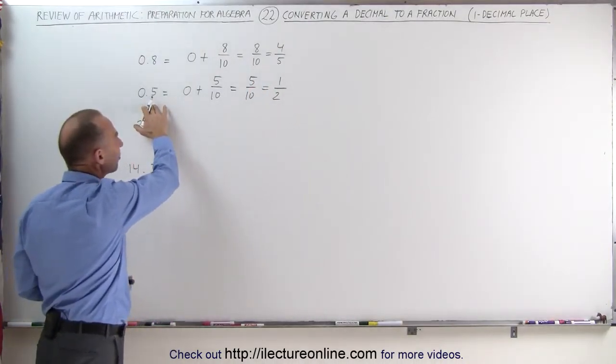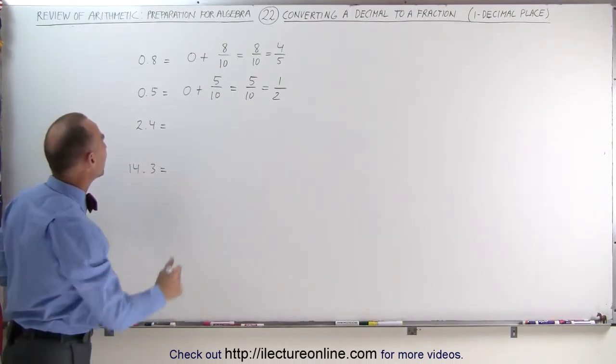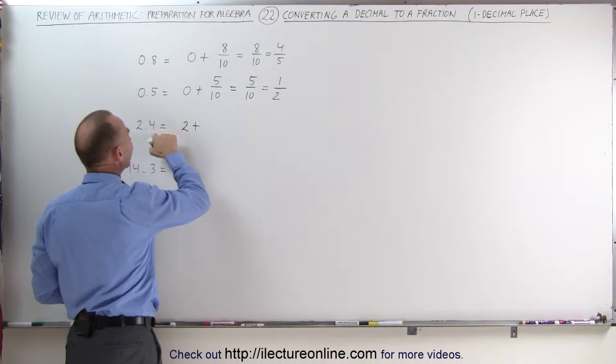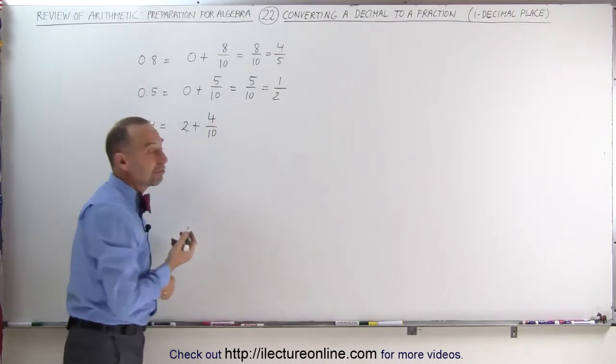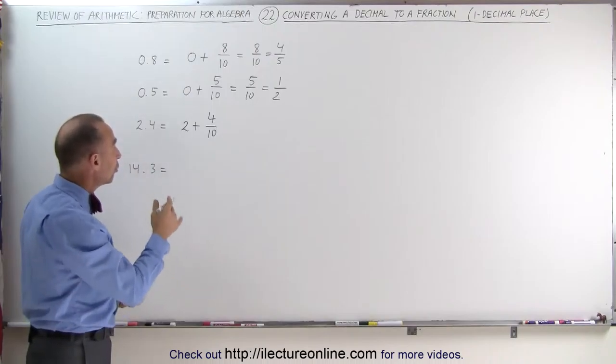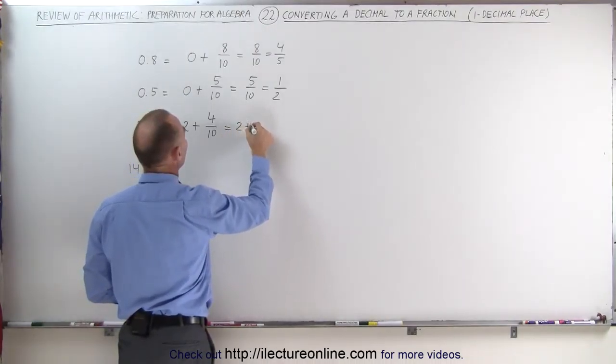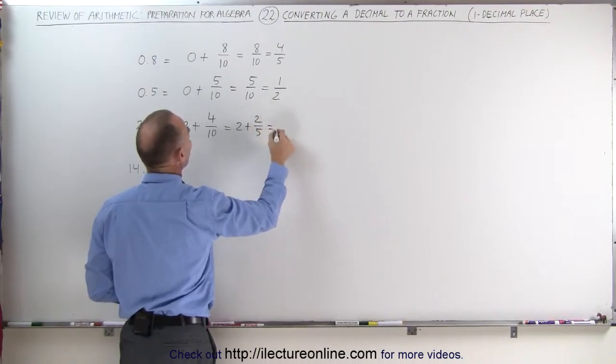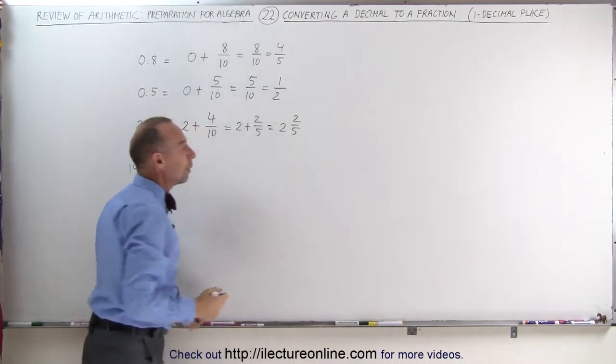The next number 2.4 means we have 2 whole units plus we have 4 tenths, 4 divided by 10. We can simplify 4 divided by 10 by dividing both the numerator and the denominator by 2. This can be written as 2 plus 2 fifths and we can write that as a mixed number as 2 and 2 fifths.